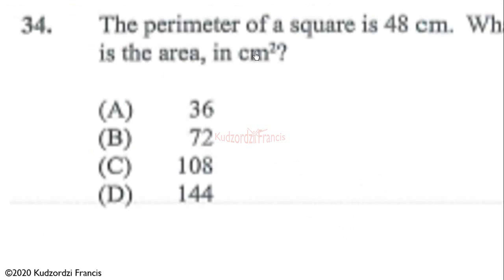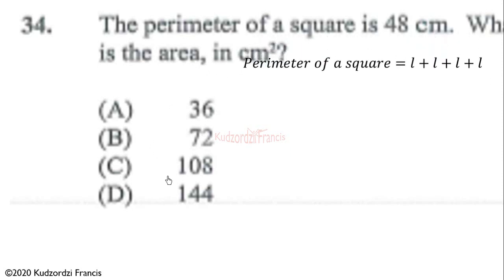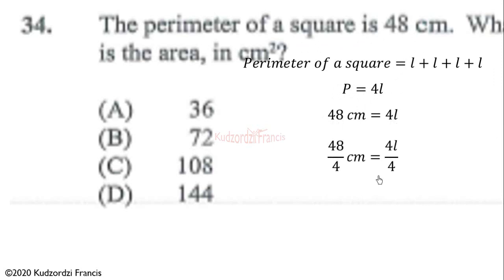Question 34: the perimeter of a square is 48 centimeters; what is the area in square centimeters? We know perimeter is the distance around the square: l + l + l + l = 4l. Since the perimeter is 48 centimeters, we have 48 = 4l, and dividing both sides by 4 gives l = 12 centimeters.